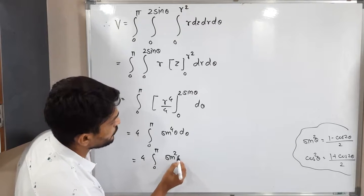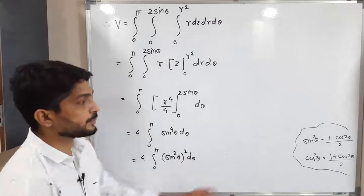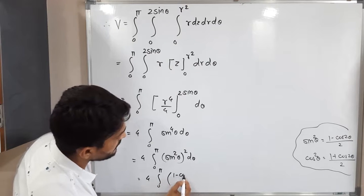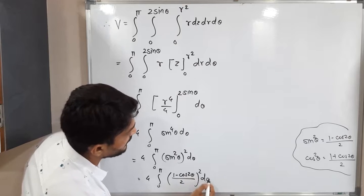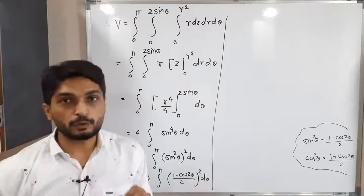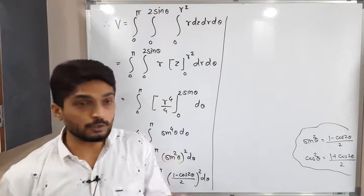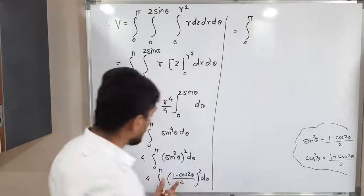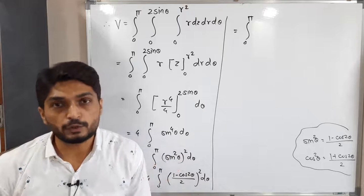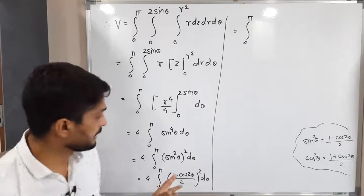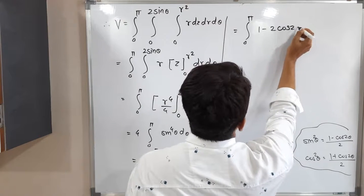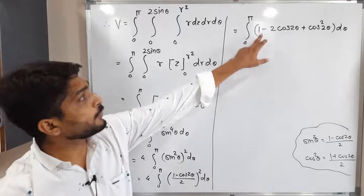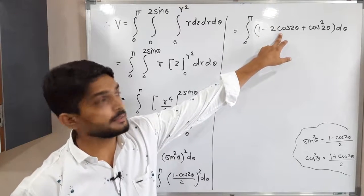Squaring the fraction: the denominator becomes 4, which cancels with the 4 outside. So we have: ∫₀^π (1 − cos 2θ)² dθ. Expanding using (a − b)² = a² − 2ab + b²: this gives ∫₀^π (1 − 2cos 2θ + cos²2θ) dθ. For cos²2θ, we apply the formula again: cos²2θ = (1 + cos 4θ)/2.